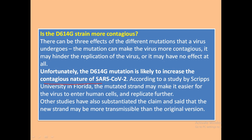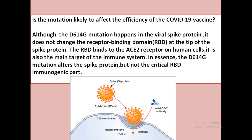Is the mutation likely to affect the efficiency of COVID-19 vaccines? Although the D614G mutation occurs in the viral spike protein, it does not change the receptor binding domain — the RBD domain — at the tip of the spike protein. The RBD binds to the ACE2 receptor on the human cell membrane and is the main target of the immune system. In essence, D614G alters the spike protein but not the critical immunogenic RBD part.